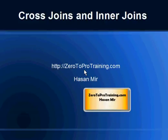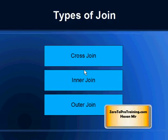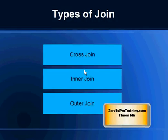Hello, in this session we will talk about cross joins and inner joins. This is Hassan Mir from Zero2ProTraining.com. First of all, what is a join? A join is a method of retrieving information from more than one table. There are various types of joins available — we will talk about cross join, inner join, and outer join.